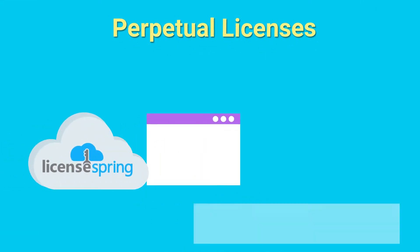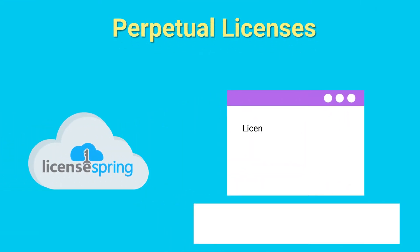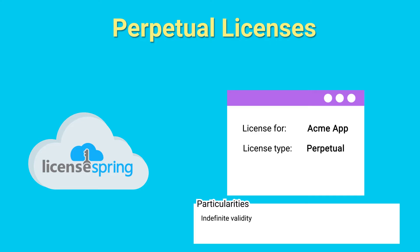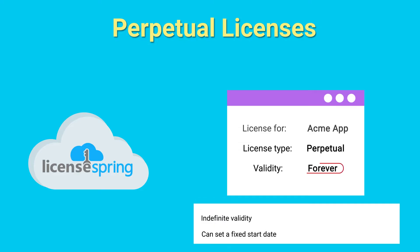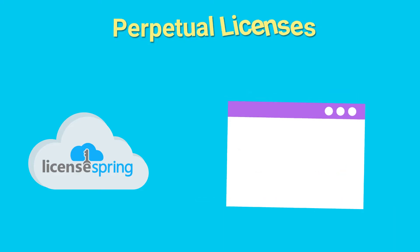Perpetual licenses define a license that does not expire. The end user simply activates the license through their application and they can continue to use that application, provided that the software vendor does not revoke it.